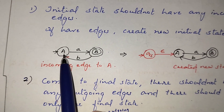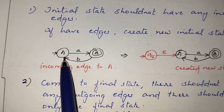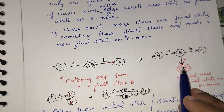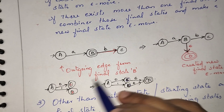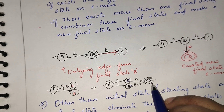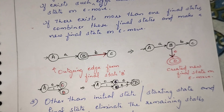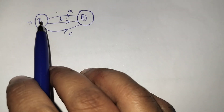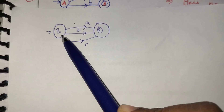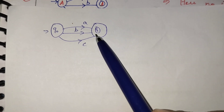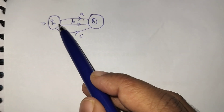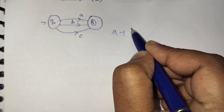To summarize the three rules: first, the starting state should not have any incoming edge — if it does, create a new starting state on epsilon move. Second, if there is any outgoing edge from the final state or more than one final state, create a new final state on epsilon move. Third, eliminate all intermediate states between starting and final state in any order. For example, if Q0 on A goes to Q1 accepting, and it accepts A, B, or C, the regular expression is A+B+C.